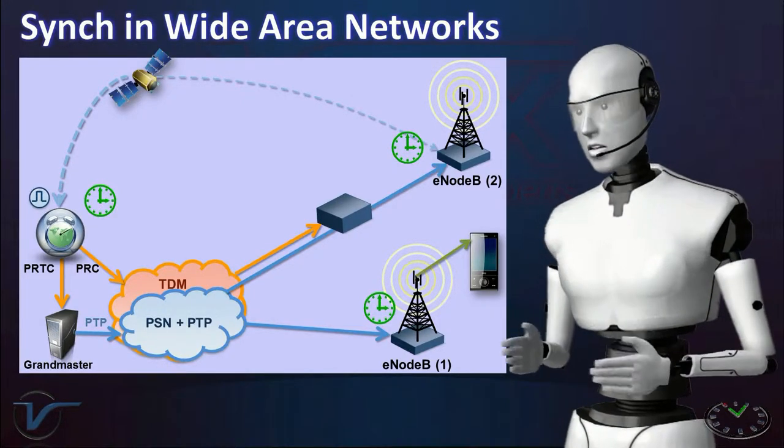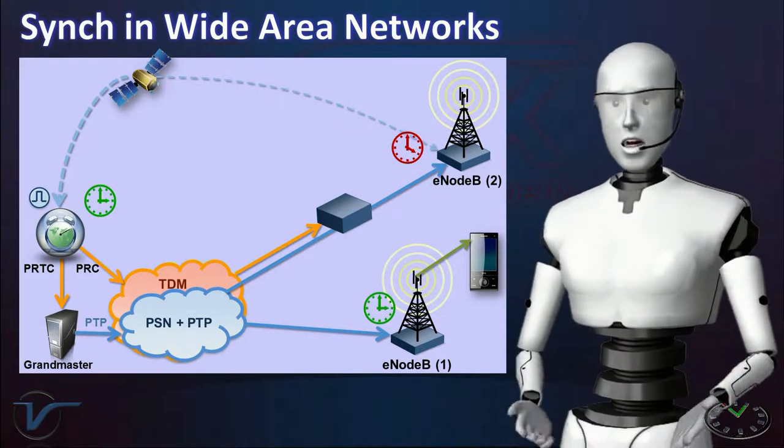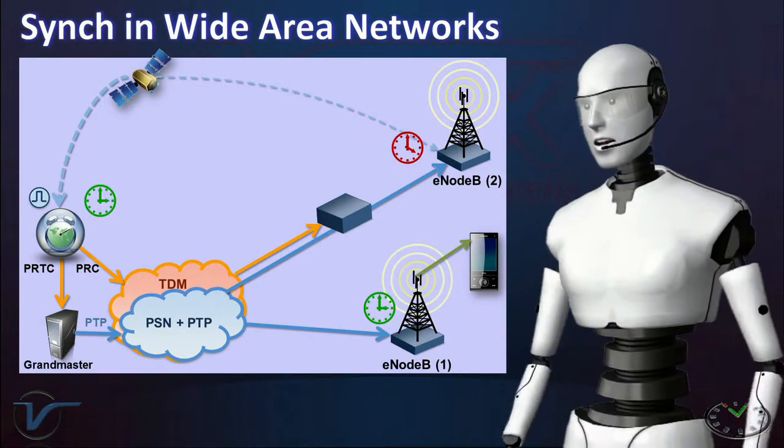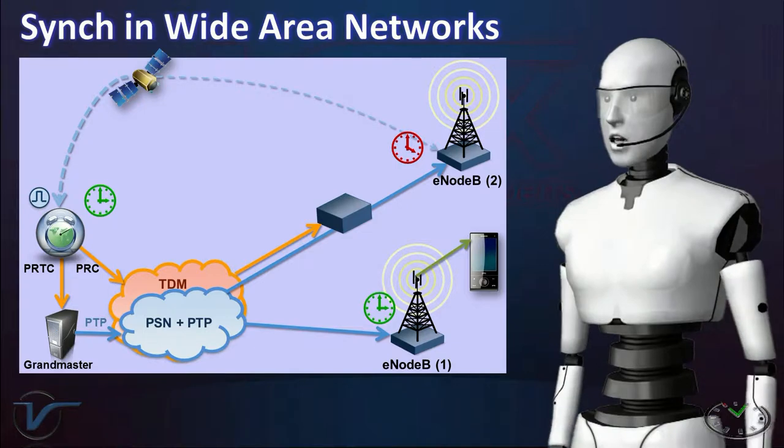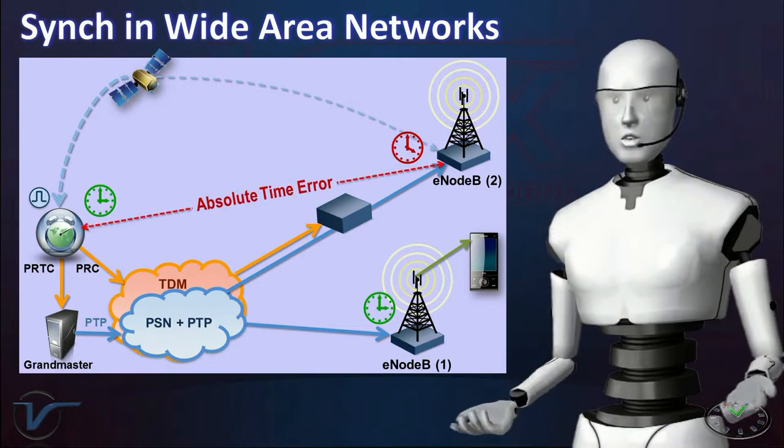The difference in local time between the node and the master, or standard reference, is expected to be less than 1.5 microseconds. This is called absolute time error.